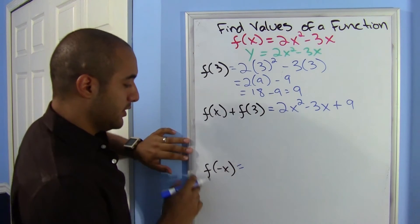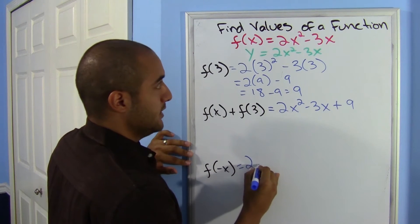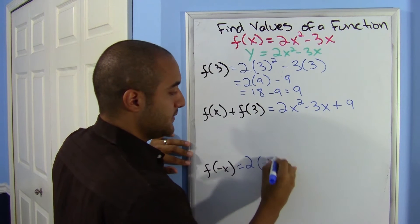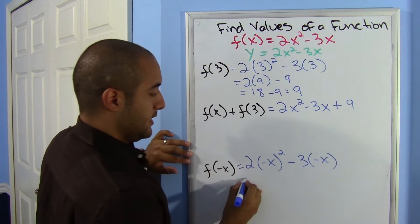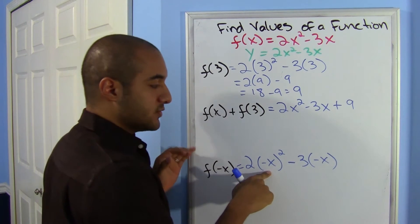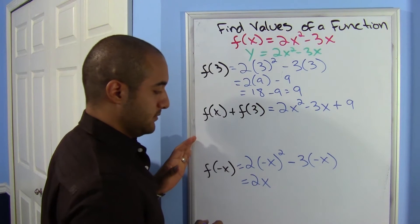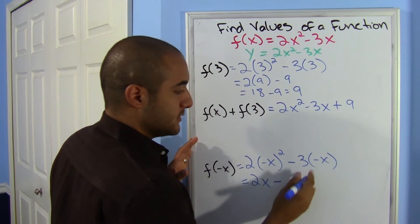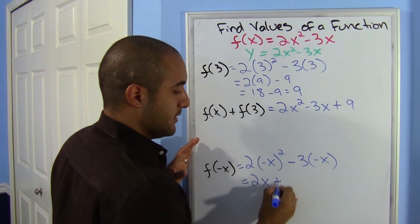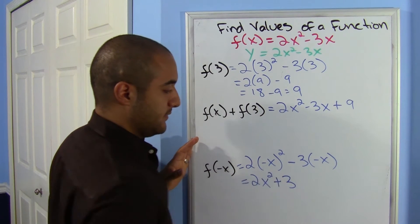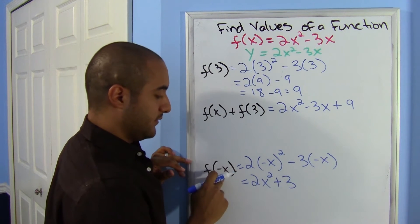What about F of negative x? In my original function, I substitute negative x wherever I see an x: 2 times (negative x) squared minus 3 times (negative x). Remember, anything squared gives a positive number, so this becomes 2x squared plus 3x. That is my answer for F of negative x.